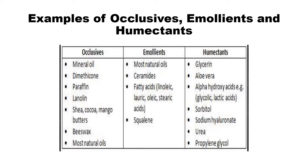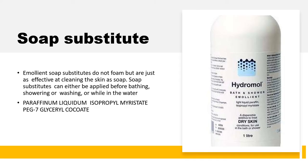Key emollients include natural oils, ceramides, fatty acids, and squalene. Humectants that increase hydration levels include glycerin, aloe vera, alpha hydroxy acid, sorbitol, sodium hyaluronate, urea, and propylene glycol. Occlusive agents that form a layer on the skin include mineral oil, dimethicone, paraffin, lanolin, shea, cocoa and mango butters, and beeswax — most of which form a layer above the skin to prevent water loss.